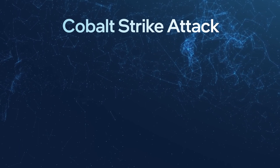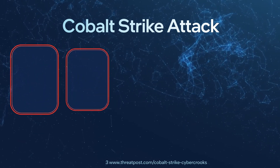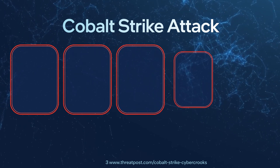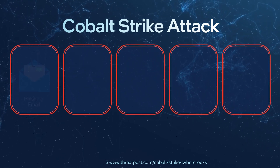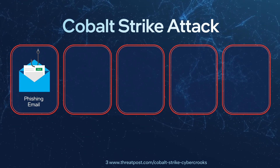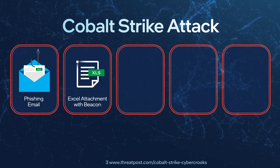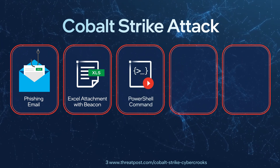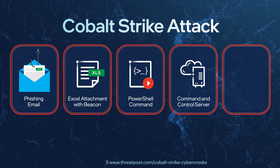Cobalt Strike two-phase attacks are favored by crime syndicates. They are growing 161% year-over-year and make a great showcase for our solution. In phase one, a naive user clicks on an Excel file attached to a phishing email. This launches a file-less code reuse attack to memory.